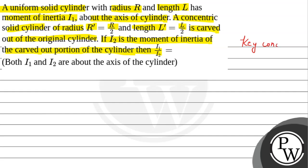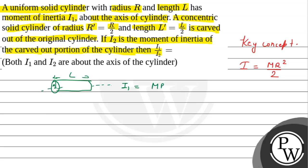The key concept for this question is the formula for the moment of inertia of a uniform solid cylinder. The moment of inertia i1 is equal to m r squared divided by 2. We have a solid cylinder of length l and radius r about its axis. So, i1 = mr²/2. This is equation number 1.